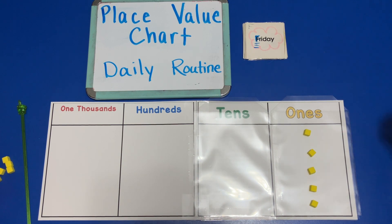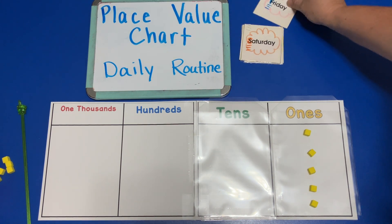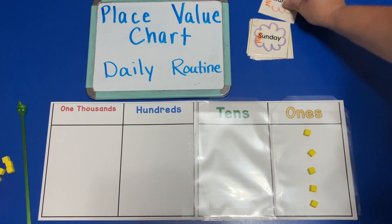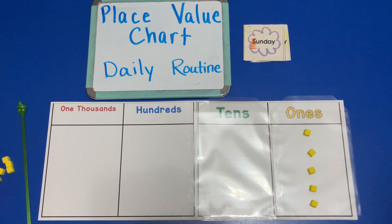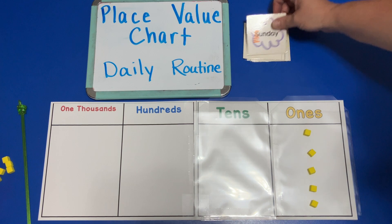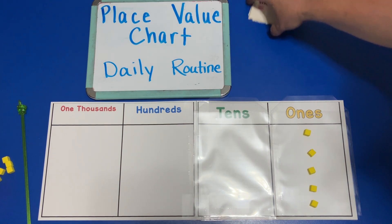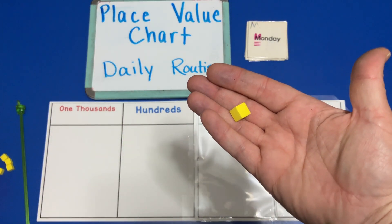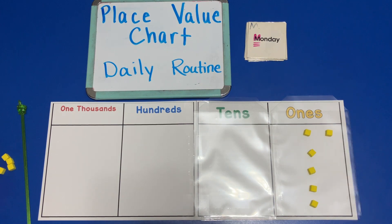We don't usually do schoolwork on the weekend, so Saturday — nothing, Sunday — nothing. And then it's Monday again. On Monday we would add one unit to the place value chart, and then we would say: what value do we have on the place value chart?